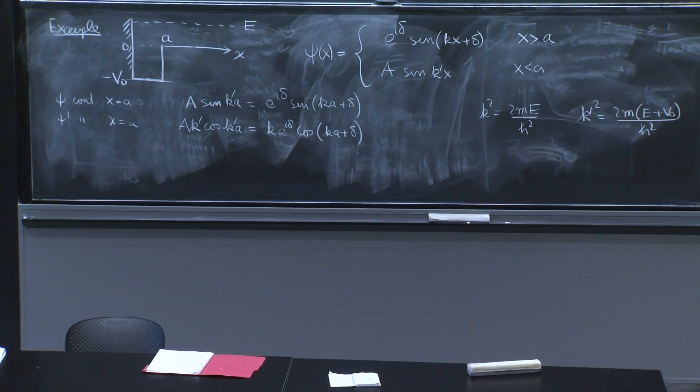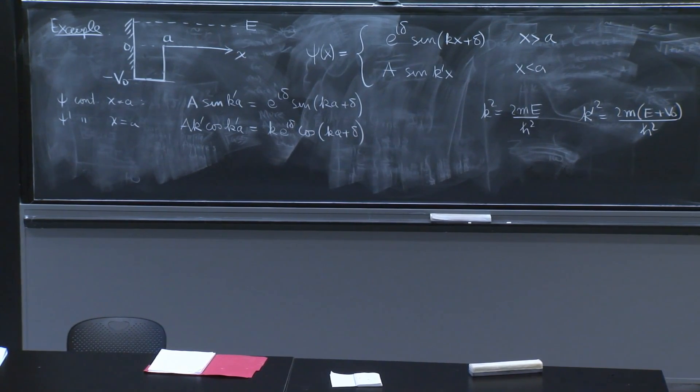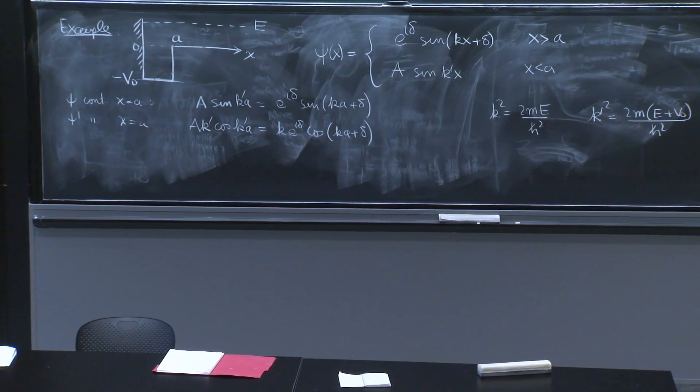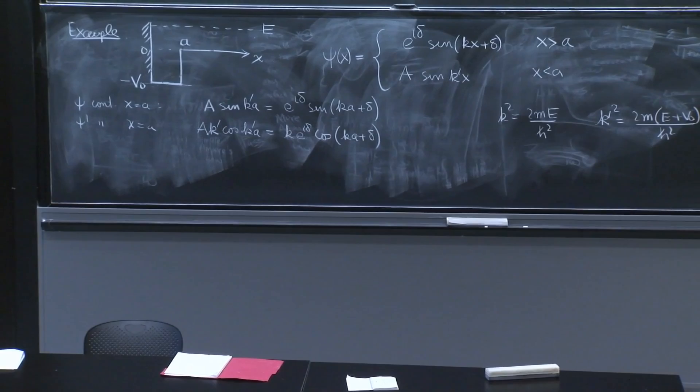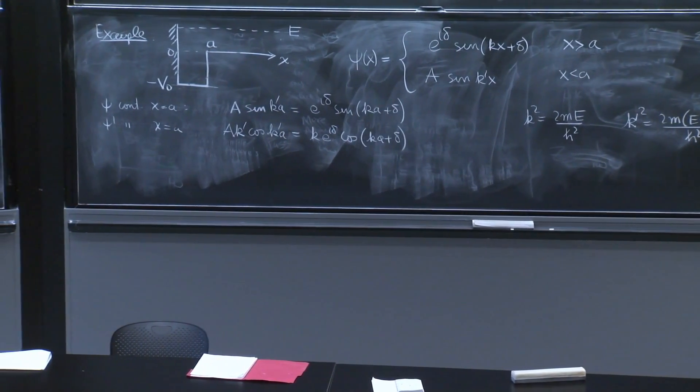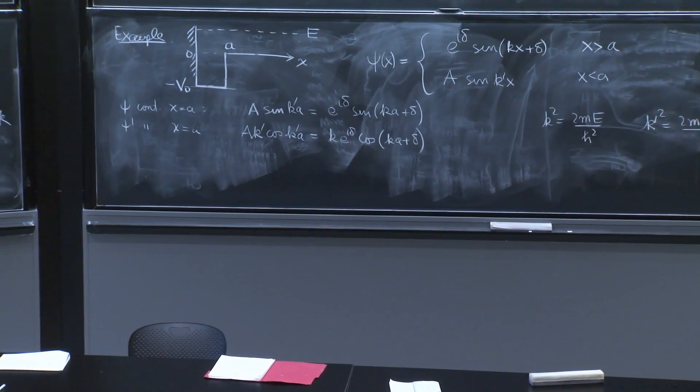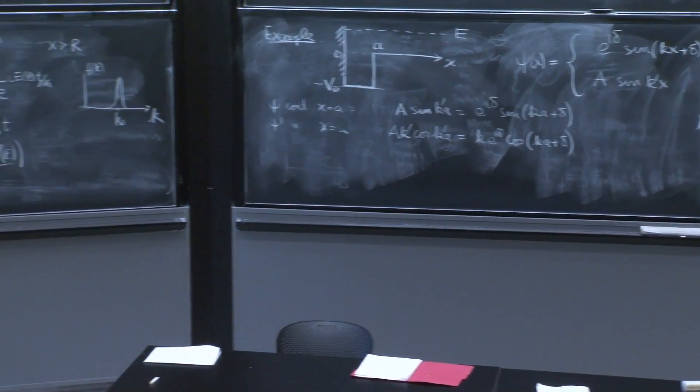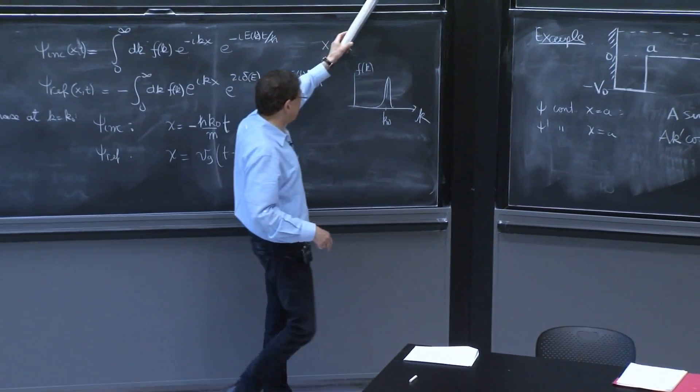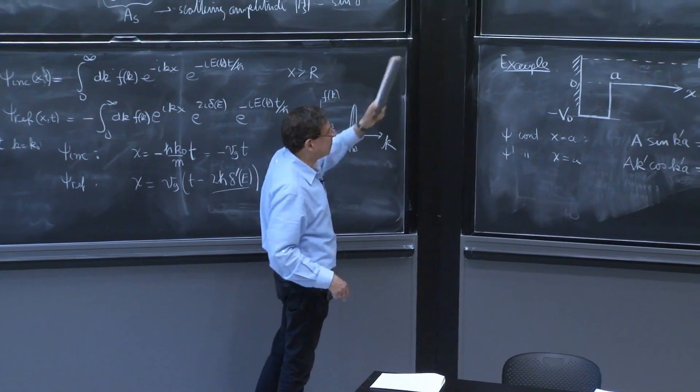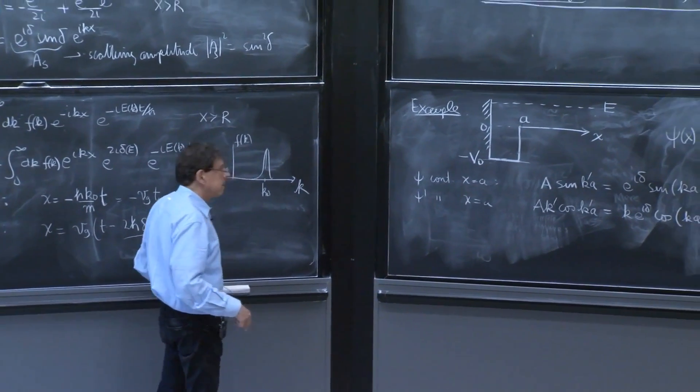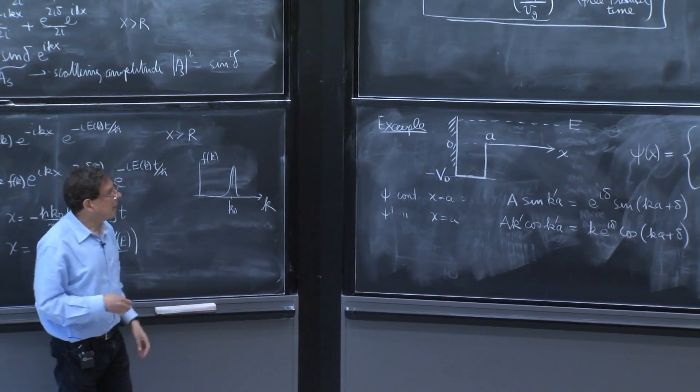What do we care for? Basically, we care for delta. That's what we want to find out. Because delta tells us all about the physics of the scattering. It tells us about the scattering amplitude, sine squared delta. It tells us about the time delay. And let's calculate it.